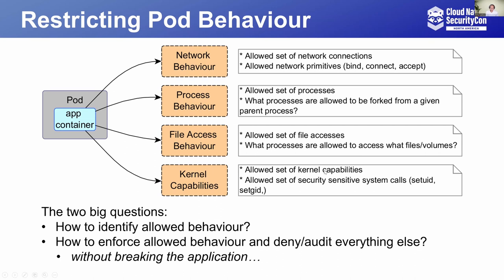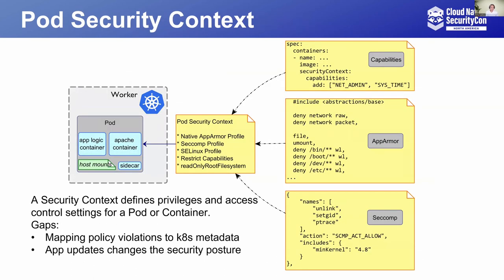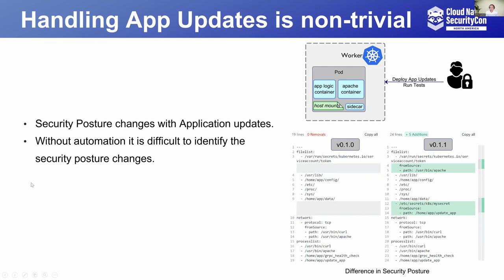What exists in the Kubernetes world that can apply constraints on these aspects? There exists pod security context, using which one can define privilege and access control settings for a pod or container, and also limit the set of kernel capabilities within the pod. The user needs to identify the set of controls — such as what capabilities are allowed, what the AppArmor profile should be, and what system calls are allowed. This is a non-trivial task. The security posture may be identified manually once, but it needs to be updated with application updates, which are frequent in cloud deployments, making it difficult to keep the security context valid without automation.